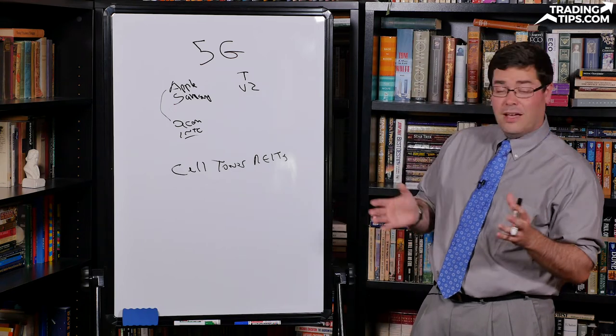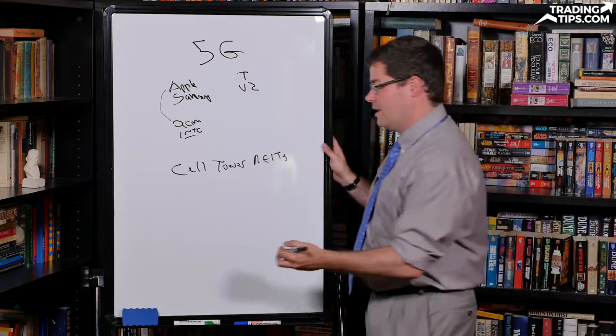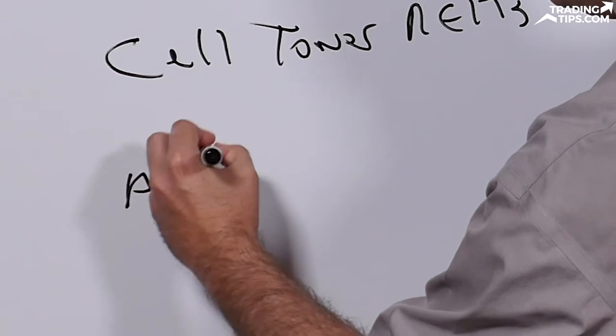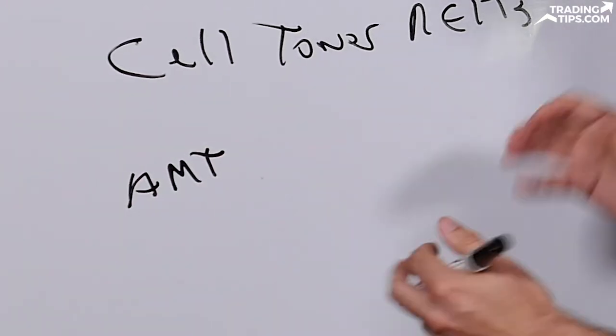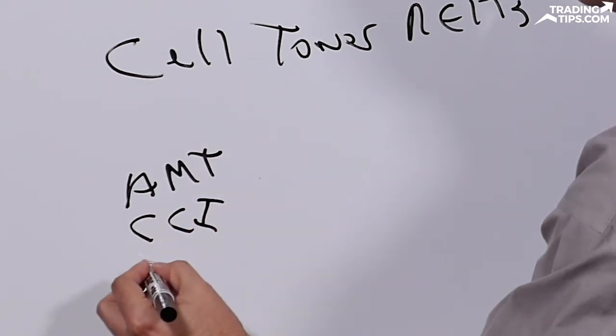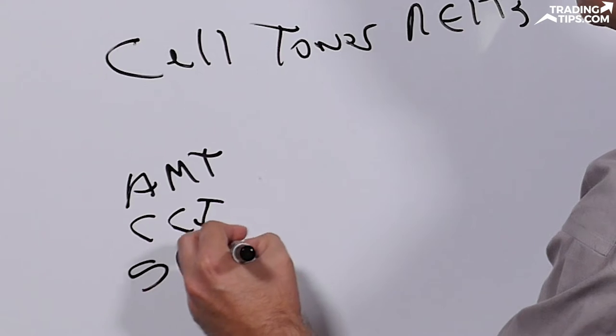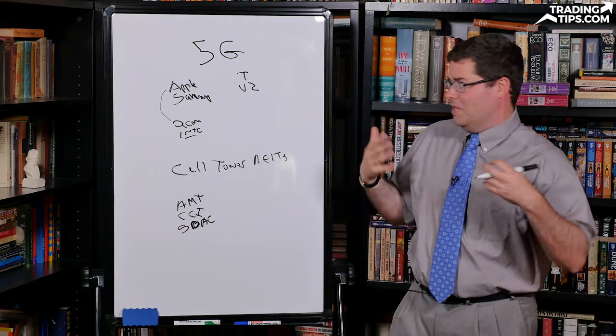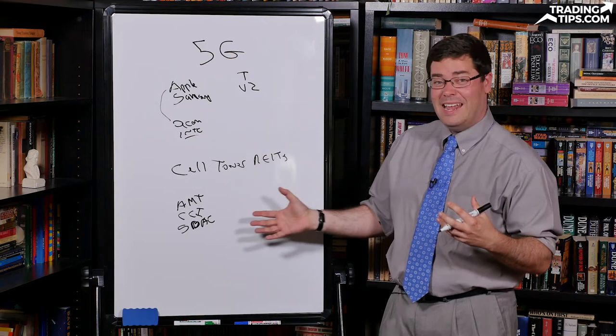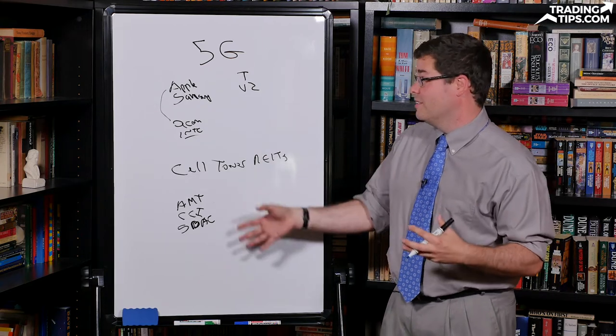So there are three companies in this space that are publicly traded. First is American Tower, ticker AMT. Then there's Crown Castle International, ticker CCI. And then there's SBA Communications, ticker SBAC. And these companies, again, own about 50% to 80% of all the cell towers around the country in the networks, just these three companies.